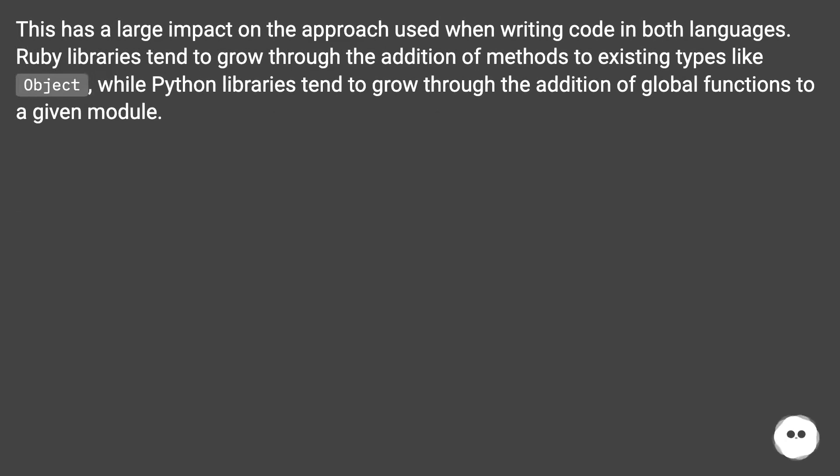This has a large impact on the approach used when writing code in both languages. Ruby libraries tend to grow through the addition of methods to existing types like object, while Python libraries tend to grow through the addition of global functions to a given module.